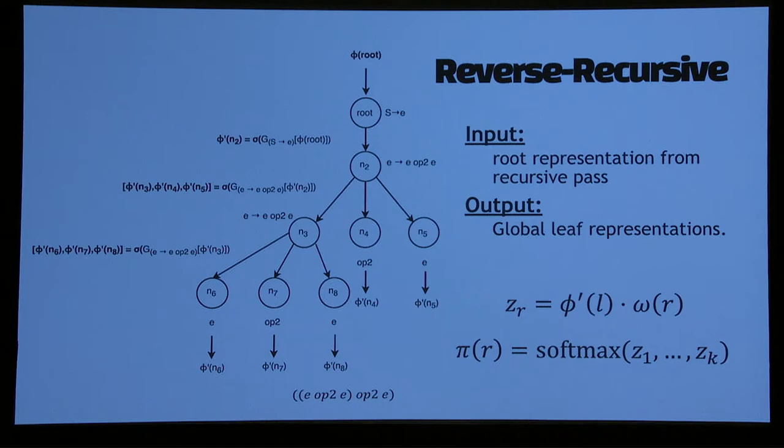We can train these tree decoders by doing cross entropy with golden trees, the synthetic data that we generate to train.